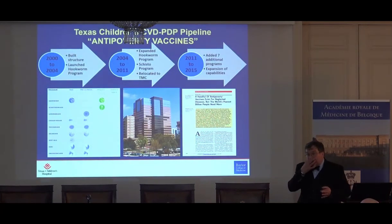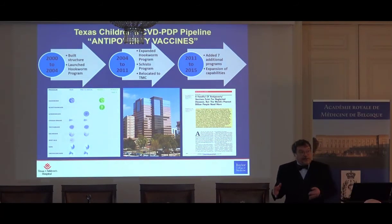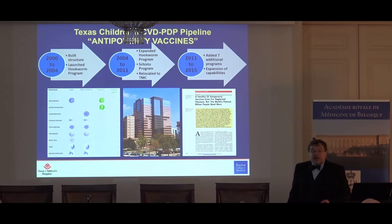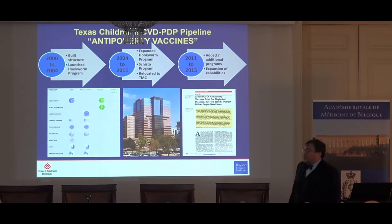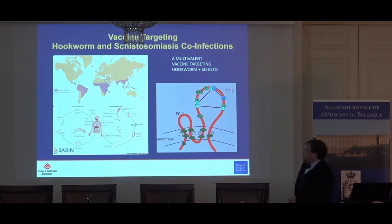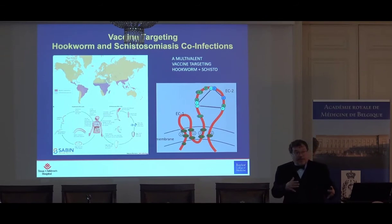Addressing these diseases clearly requires a multidimensional approach. We're very interested in developing vaccines, but the problem is a market problem — we're making vaccines that big pharmaceutical companies would not be interested in making. So we've set up a non-profit product development partnership in the Texas Medical Center, part of Texas Children's Hospital, developing vaccines for a wide variety of neglected tropical diseases. We now have both a hookworm and a schistosomiasis vaccine in clinical trials in Gabon and Brazil, past phase one and moving into phase two.